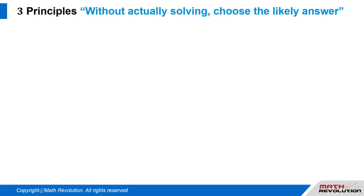Three principles. If you fall into any of the three principles below, choose the most likely answer. Let's look at the three principles that you should apply for choosing the most likely answer without actually solving the problem by using the variable approach method. Not having to solve the problem saves a lot of time and is only possible by applying the variable approach method.